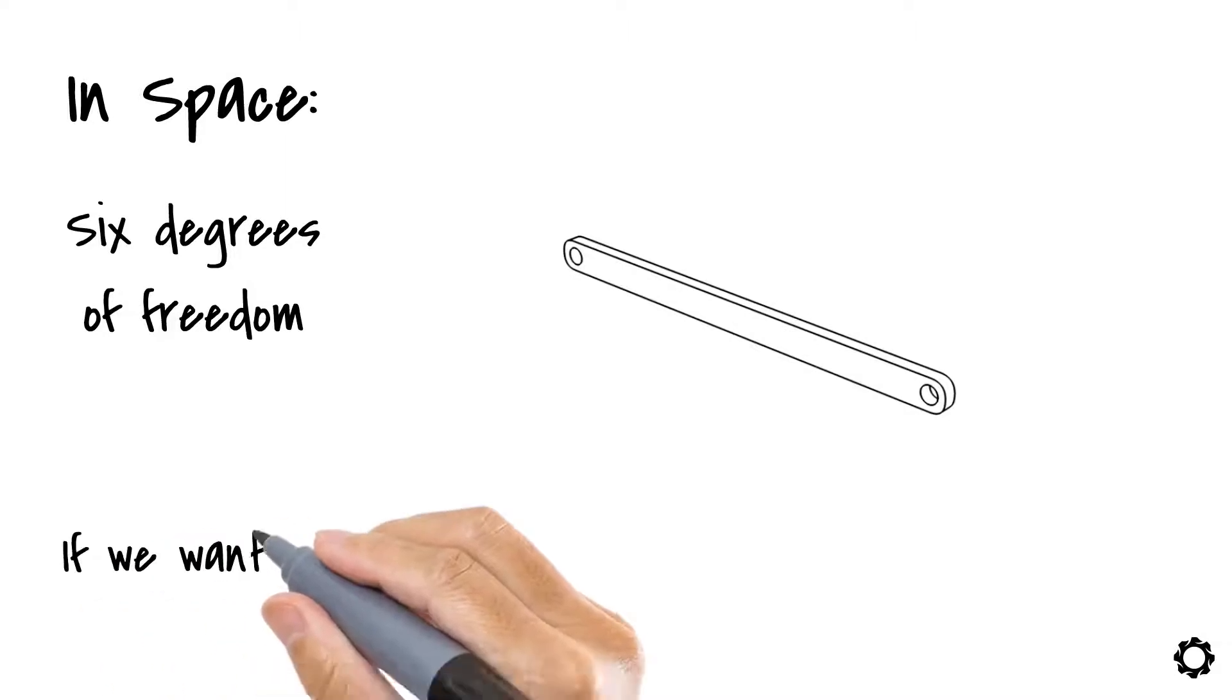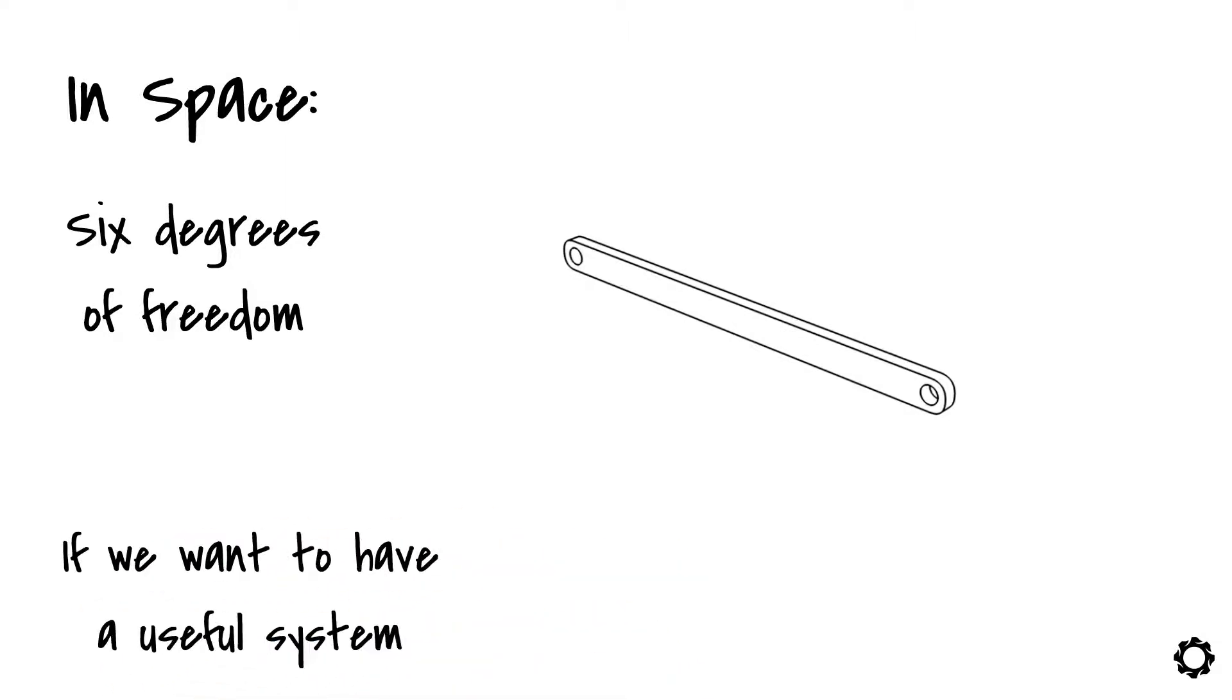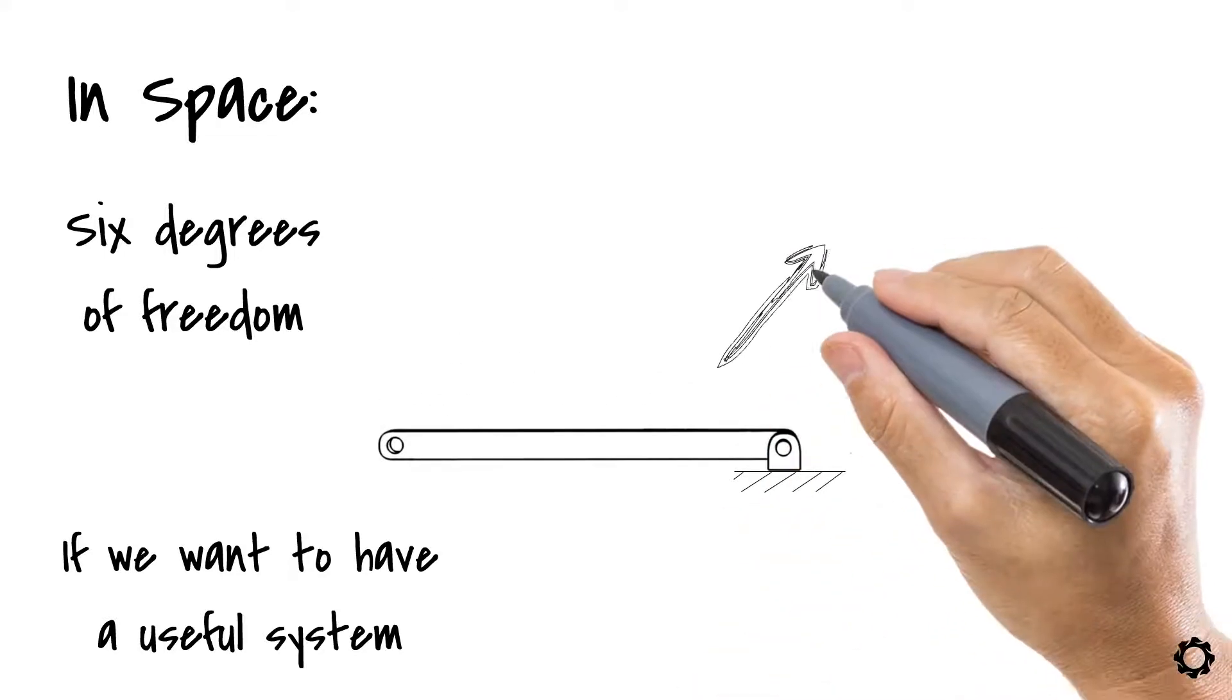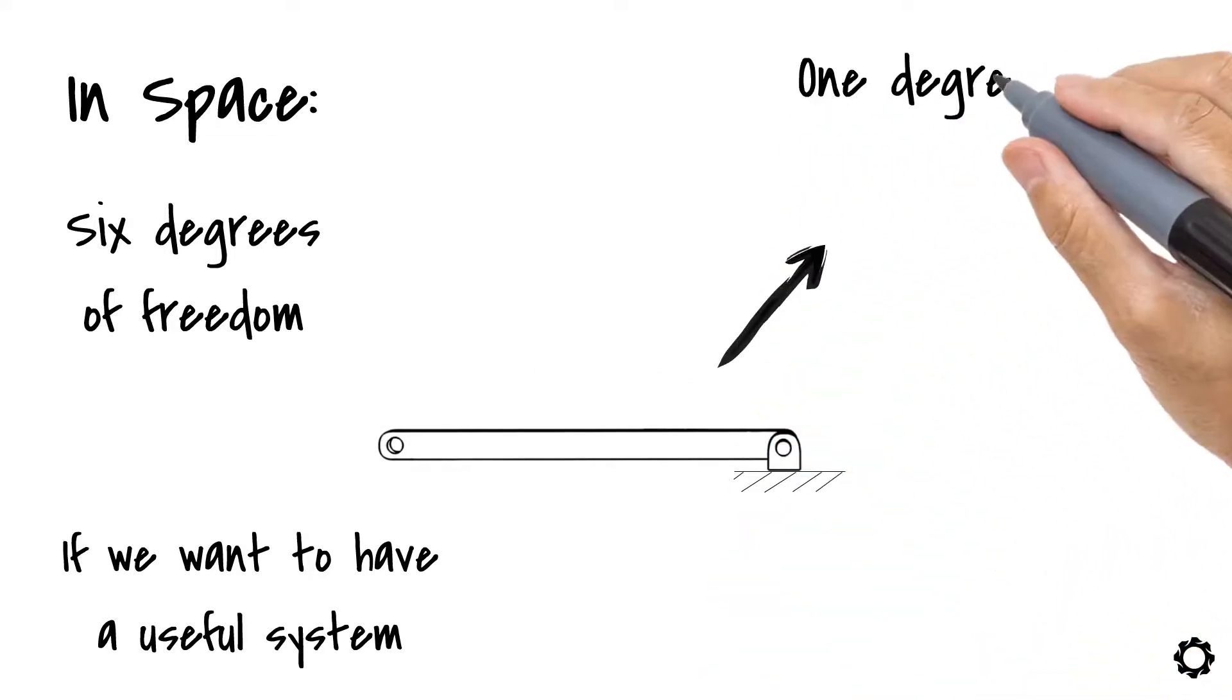Of course, if we want to have a useful system, this body must be attached to the ground with a joint or joints. As you intuitively notice, joining the bodies to the ground will reduce the number of degrees of freedom. It could then result in 3 or 4 or 1 degree of freedom.